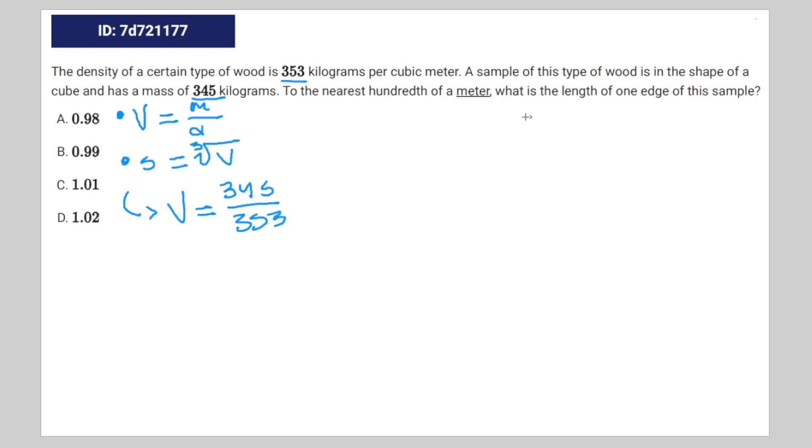But we're actually looking for the side length or the edge of a cube, so we're going to have to find the side length. So we're just going to take this number and cube root it. That's going to be side length equals the cube root of V, which is 345 divided by 353, which is approximately equal to 0.99. Therefore, B is the correct answer.